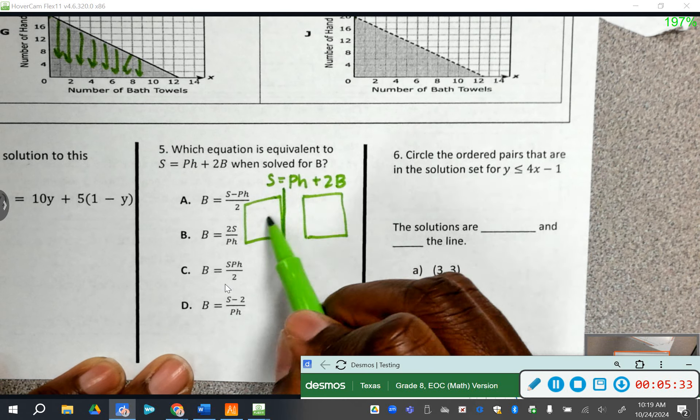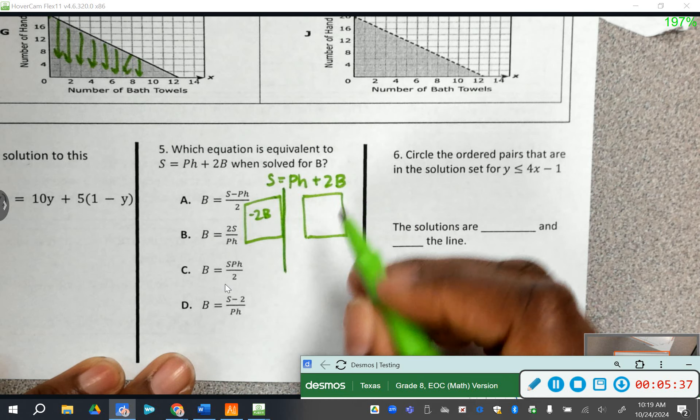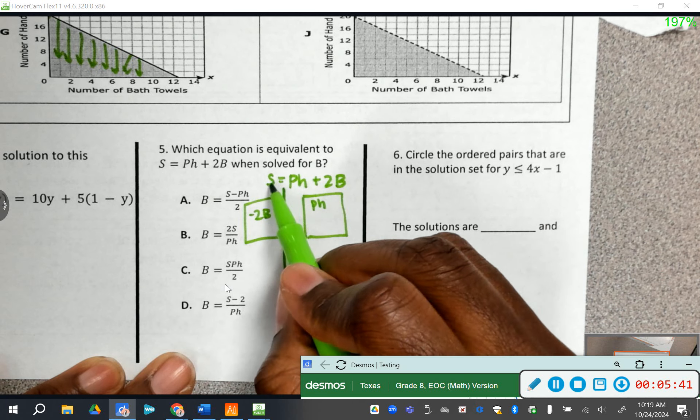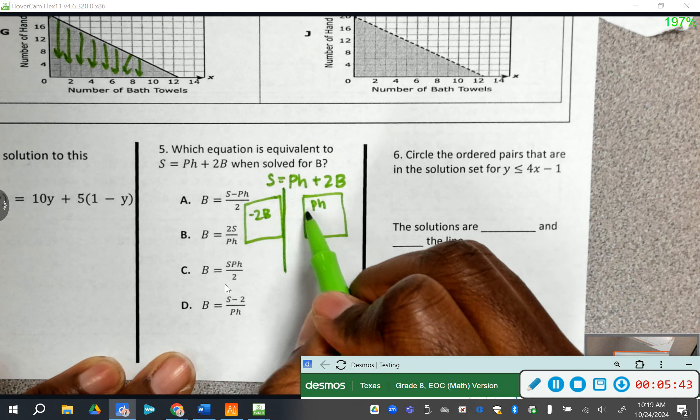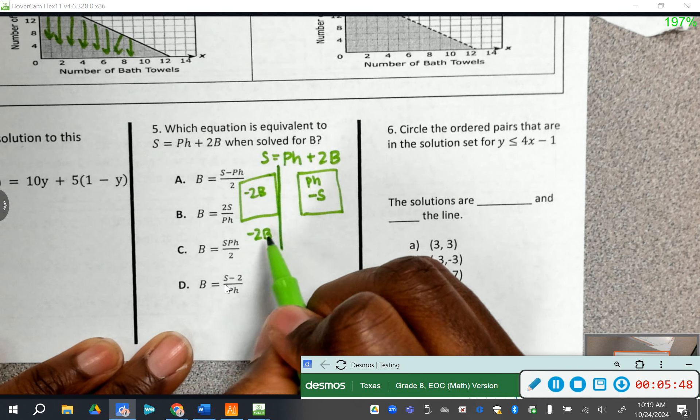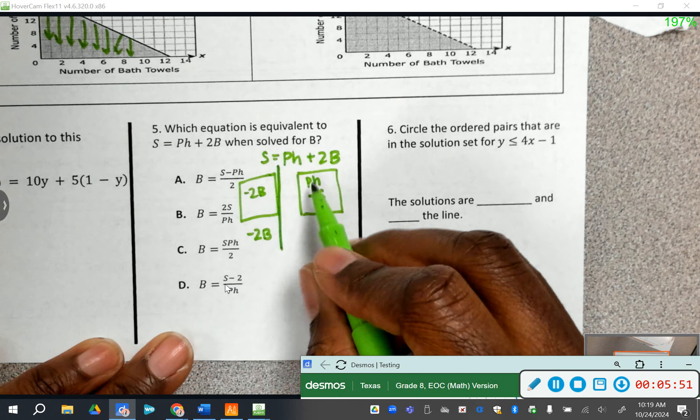Remember, if it crosses the line, change the sign. So now we have negative 2B and everything else goes here. So PH goes here and then this S is about to cross the line, so it becomes negative S. So all of our Bs are over here. We only have one thing with the B, so there's nothing to combine. Over here, we can't combine because there's too many letters, so it just kind of forms a little equation or a little expression over here. PH minus S.